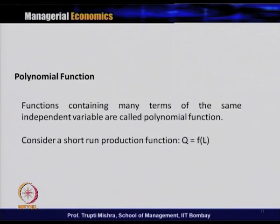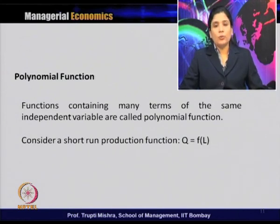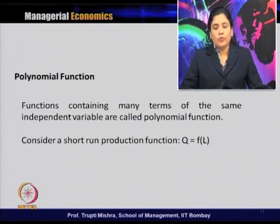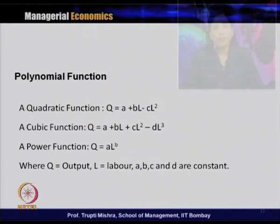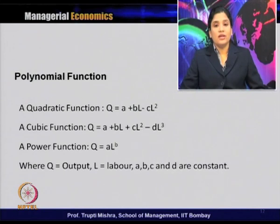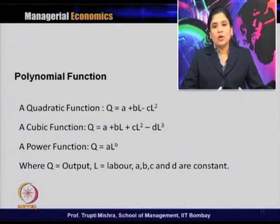The third kind of function used in economic analysis is polynomial function. A polynomial function contains many terms of the same independent variable. Consider a short-term production function where output Q is a function of labor L. The polynomial function can take a quadratic form: Q = A + BL − CL², a cubic form: Q = A + BL + CL² − DL³, or a power function form: Q = A · L^B, where A, B, C, D are constants.